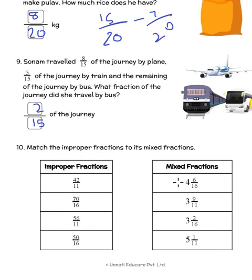It is improper fractions to mixed numbers. So we have 42 divided by 11. So we have 42 divided by 11.